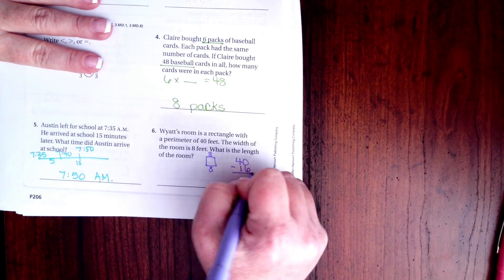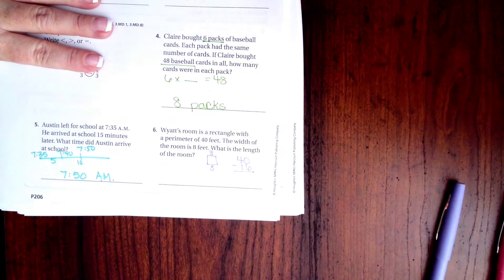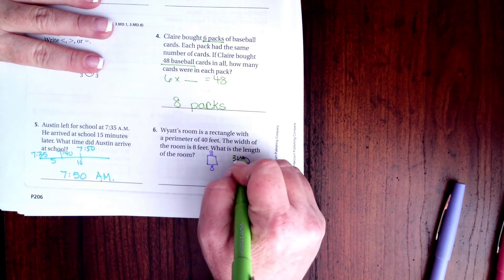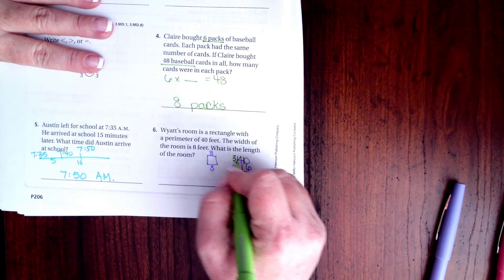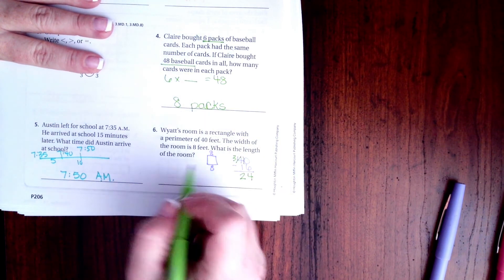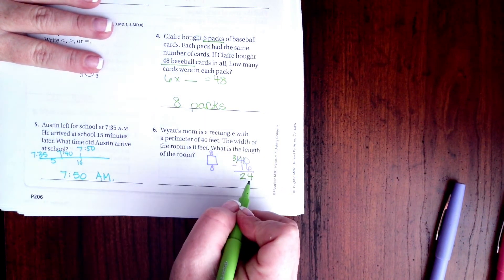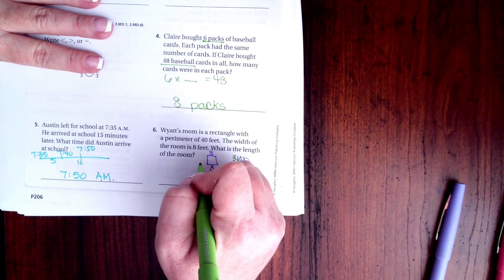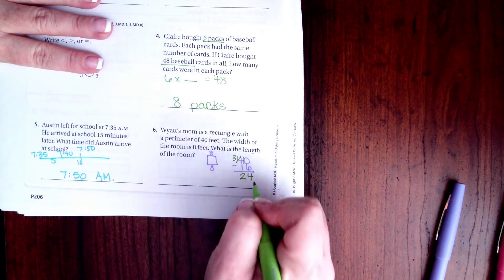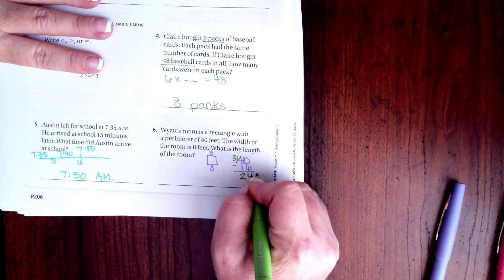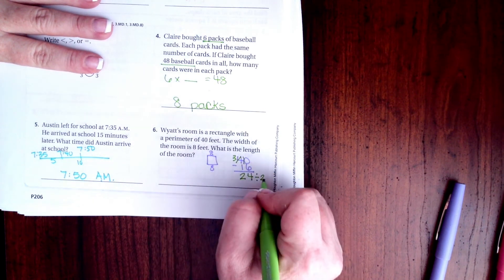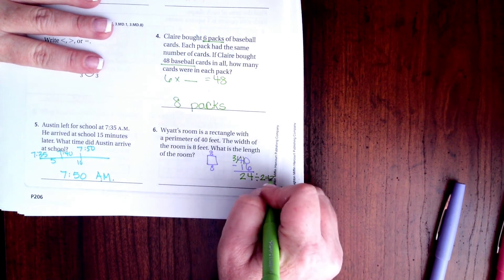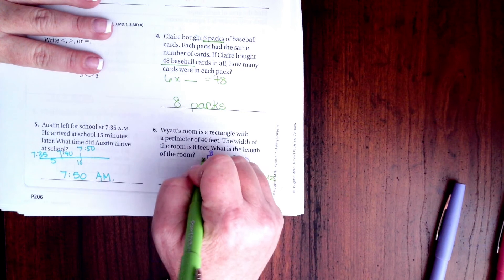Well, zero can't take away six, I'm going to borrow. 10 minus 6 is 4, 3 minus 1 is 2. So now that's 24. That means that not each side is 24, it means that I have to split that 24 up between two because I have two sides. Well, 2 times 12 is 24, so that means that this side is 12 and this side is 12.